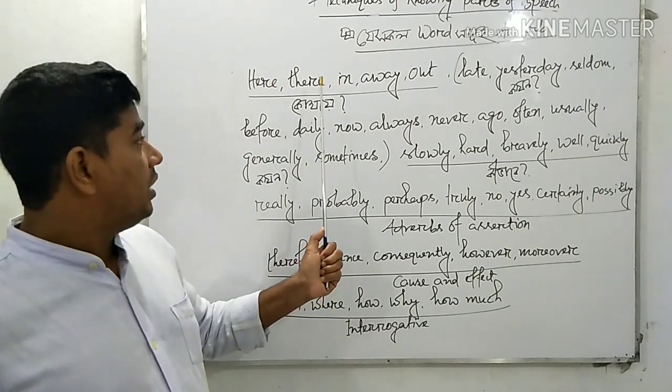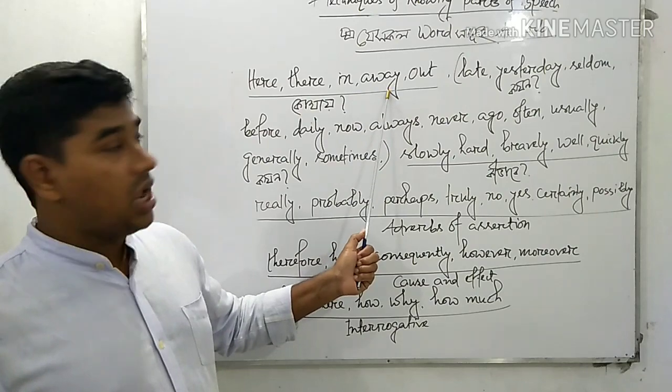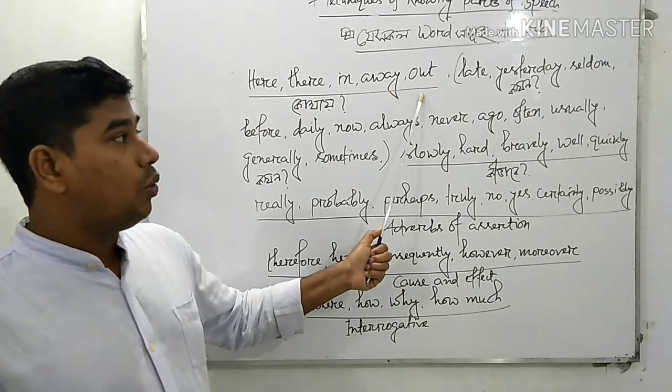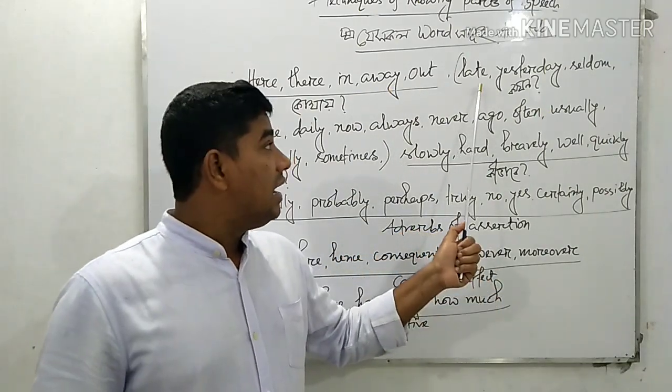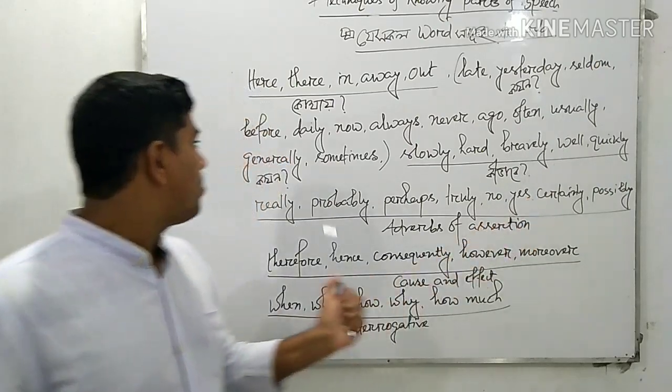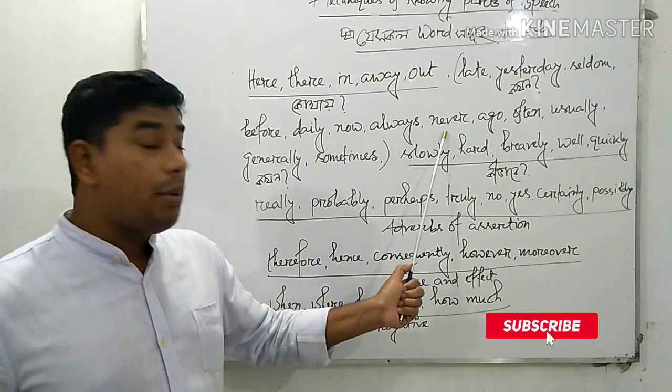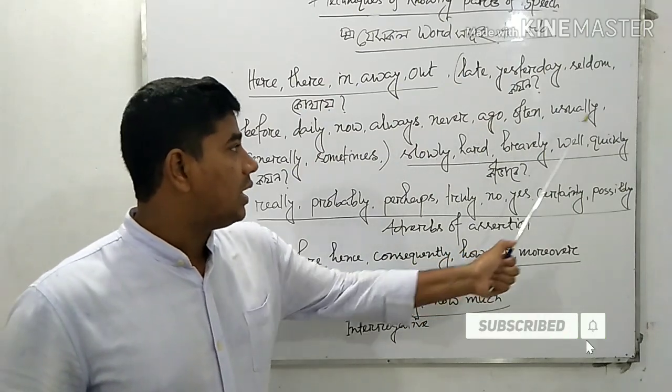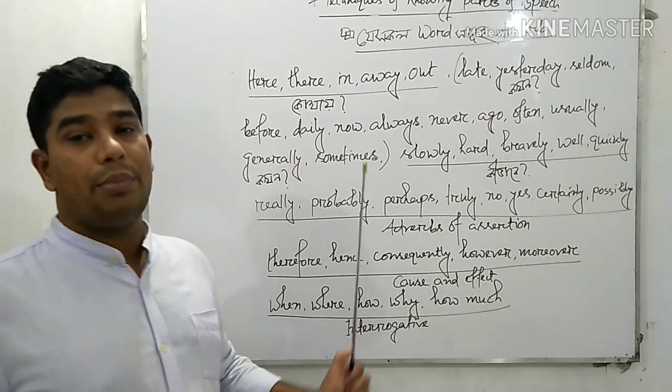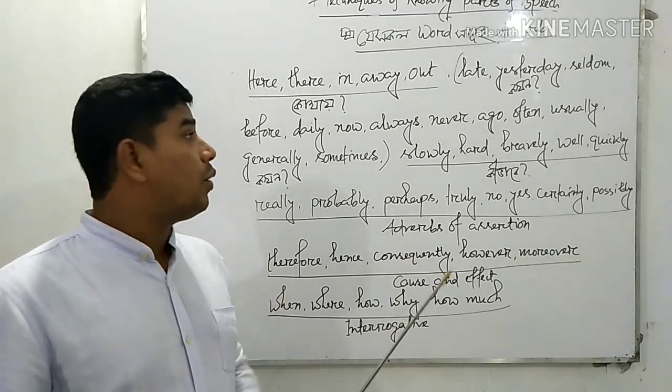Now adverbs. Adverbs of place: here, there, in, away, out. Adverbs of time: late, yesterday, seldom, before, day, now, always, never, often, usually, generally, sometimes.